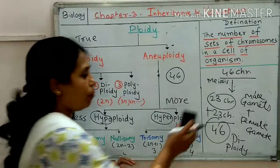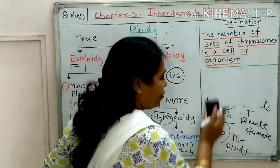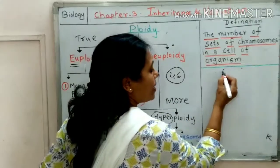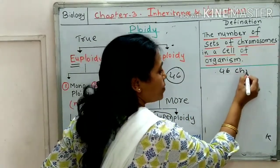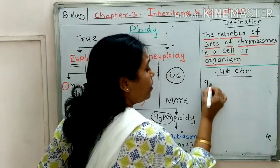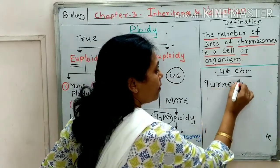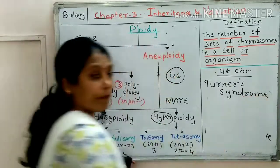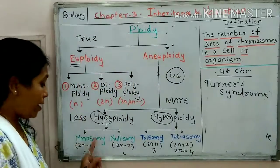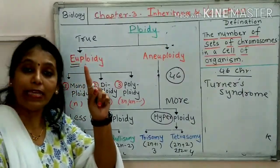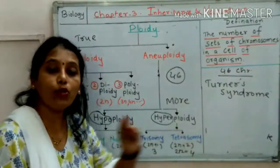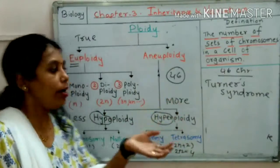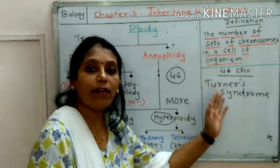Monosomy: 46 chromosomes is the normal count. If even one chromosome is less than the normal chromosome number, the condition results in a disorder called Turner's syndrome.